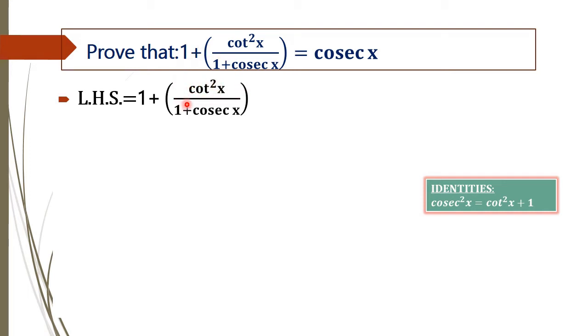At first, we have to rewrite cot squared x in terms of cosec x. We know that cosec squared x equals cot squared x plus 1. But by using this identity, we can rewrite cot squared x as cosec squared x minus 1.